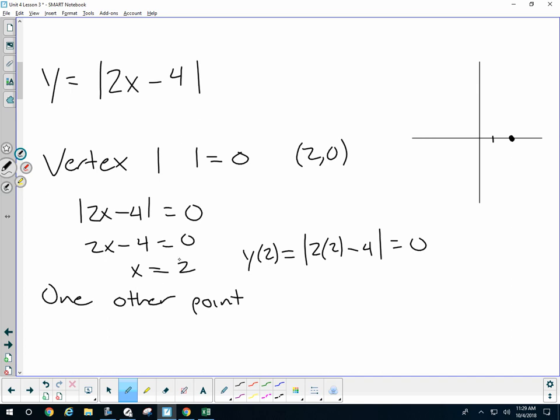Well, if I'm at 2, let's go to 3. I'll plug in 3 in for x. I get the absolute value of 6 minus 4, which is 2. It means I have the point 3, 2. So that means I have the point 3, 2.